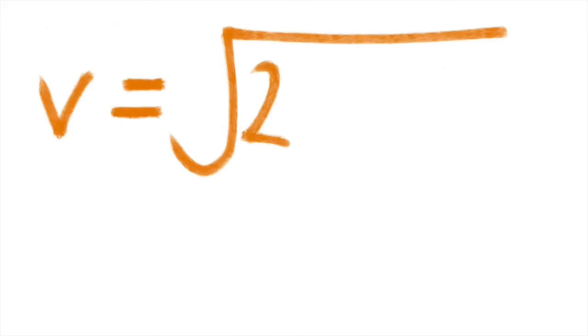Therefore, v is equal to the square root of two times mu sub k times g times d.